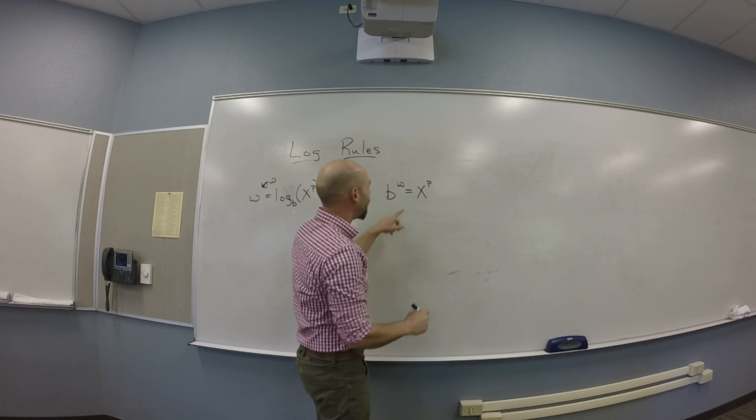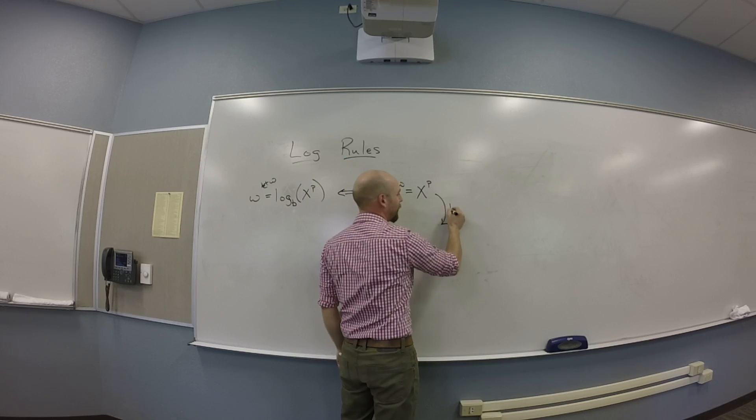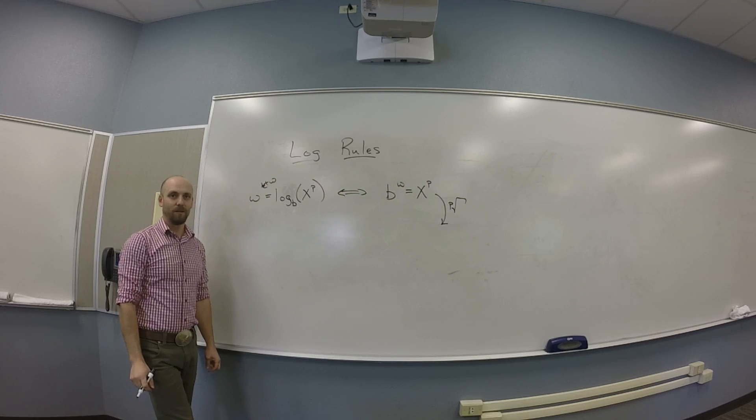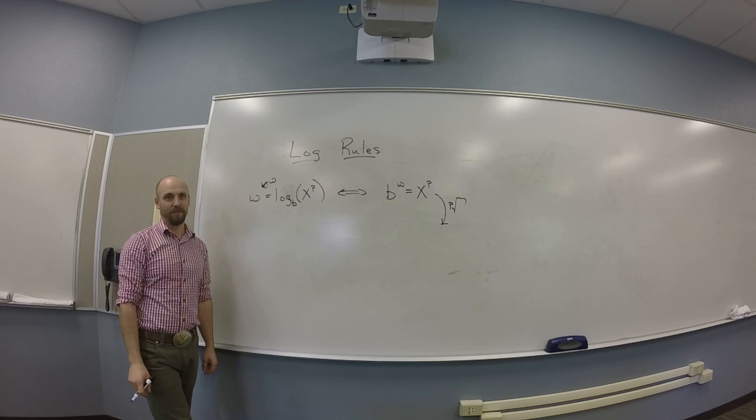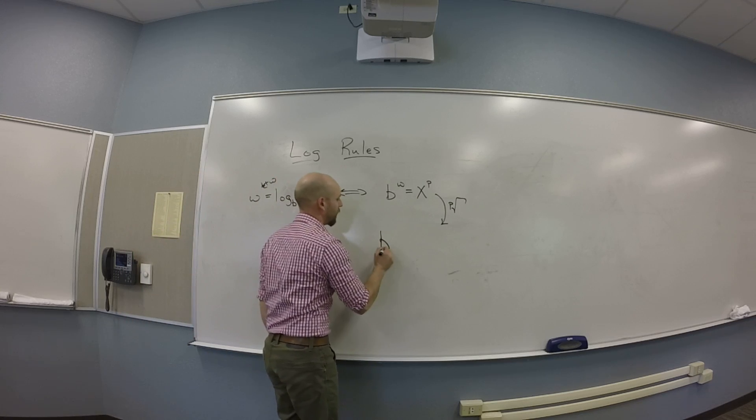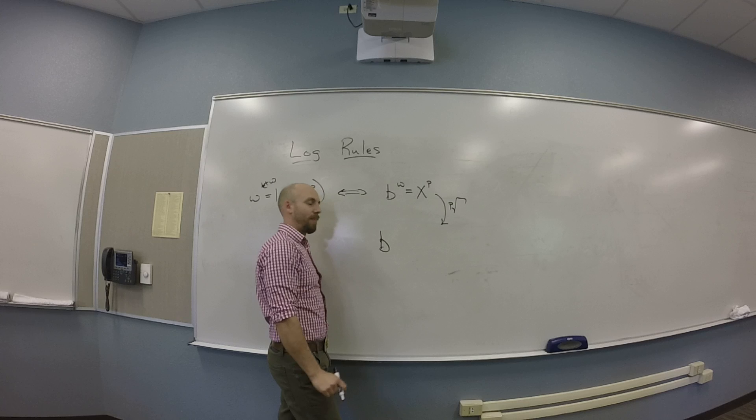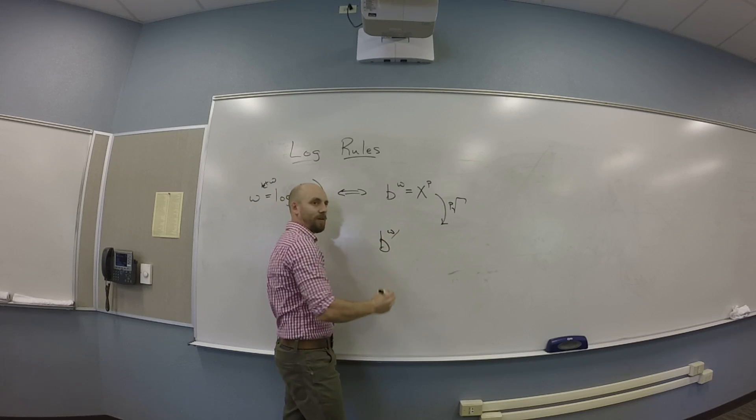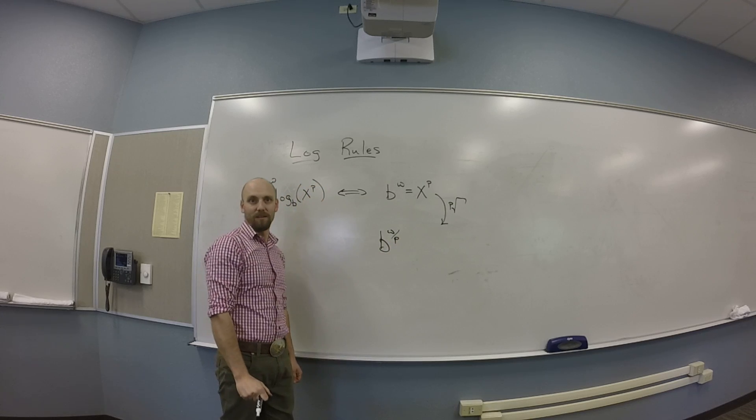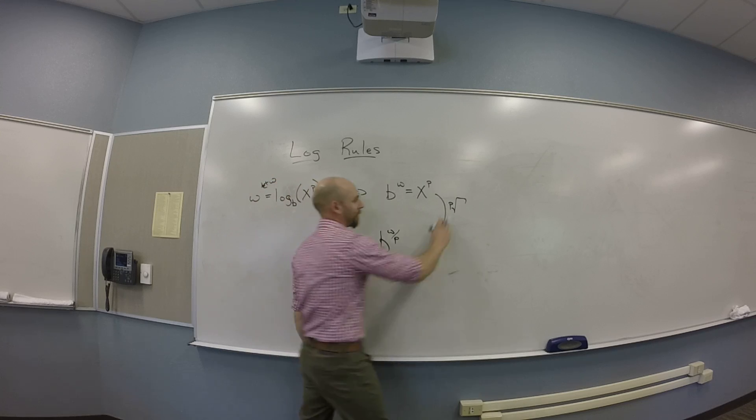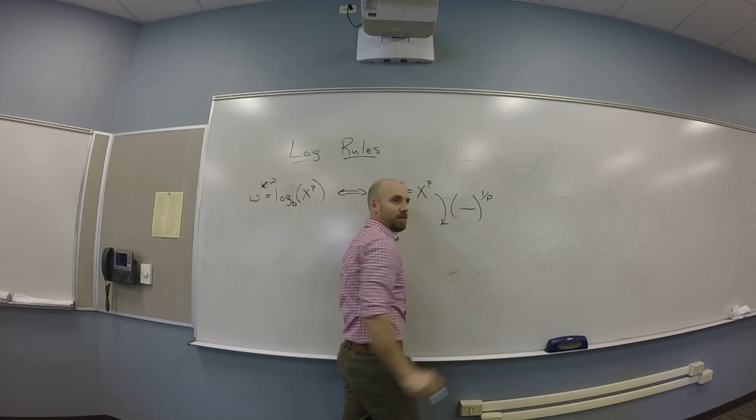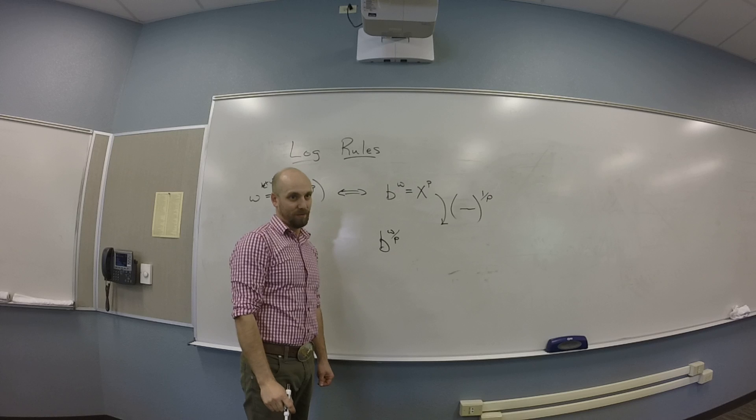So what if I did this? What if I take the pth root of both sides? So I'm going to do 1 over p power to both sides. That's doing the pth root to both sides. So if I do the pth root to both sides, I get b to the w over p. You guys remember that rule about exponents? It's a cool rule.